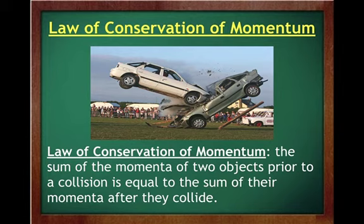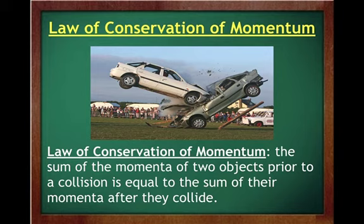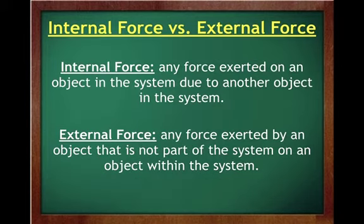The law of conservation of momentum states that the sum of the momentum of two objects prior to a collision is equal to the sum of their momentum after they collide. If you can figure out the momentum of each individual object before a collision and then figure out the momentum afterwards, it will be equal — there's no momentum lost in that scenario.